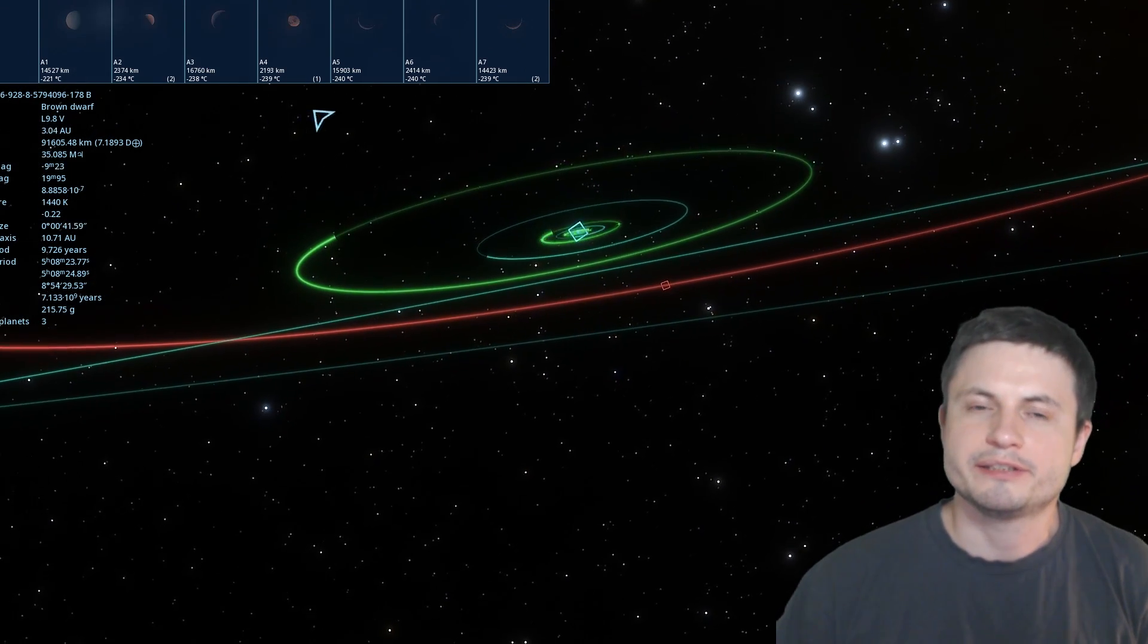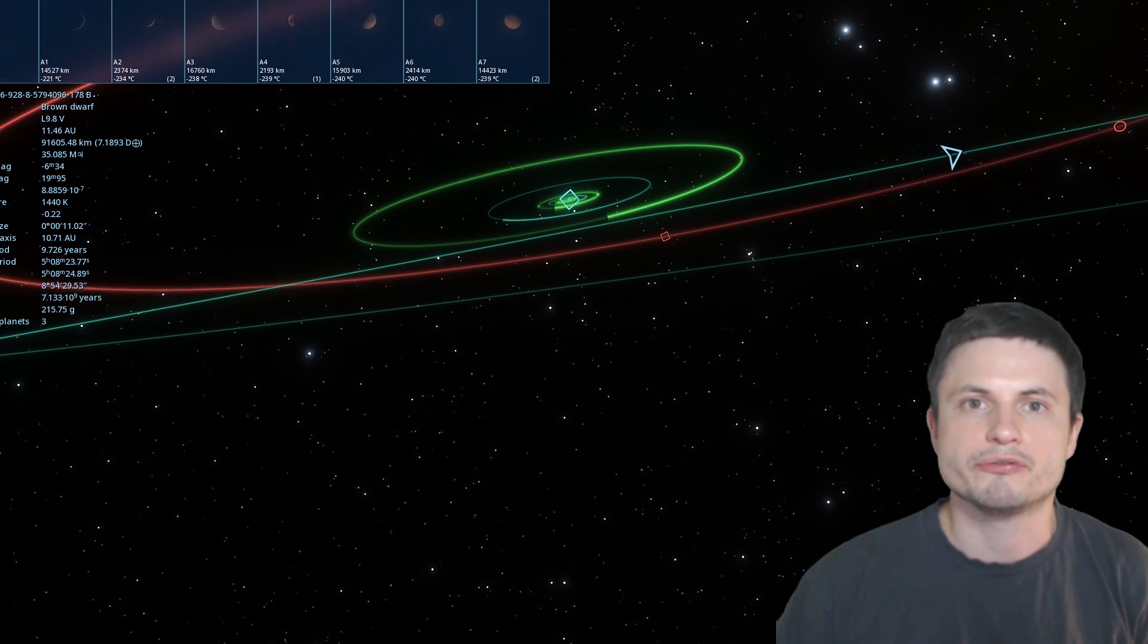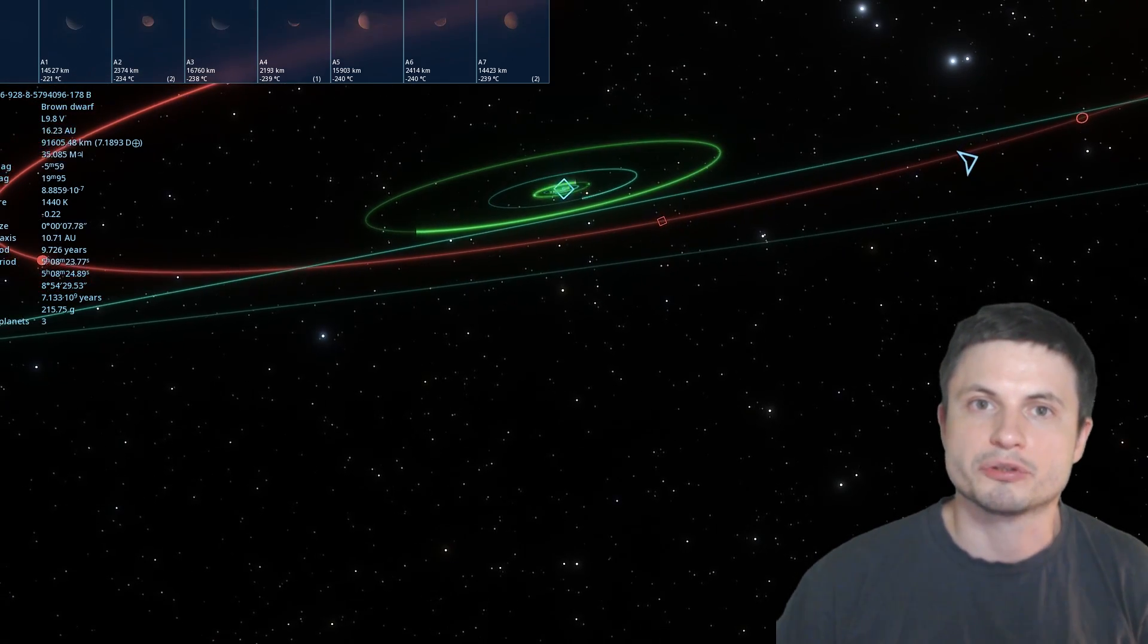And we believe that these systems do exist, we just haven't really seen any just yet, mostly because it would be very difficult to find these black holes. Unless of course something collides with them.